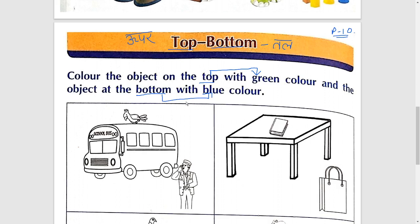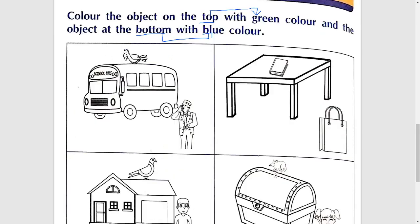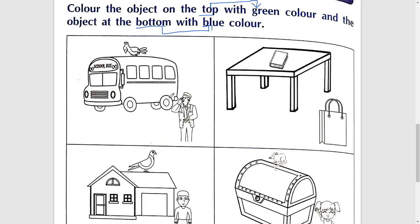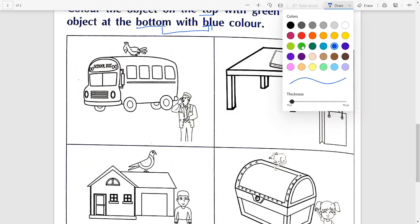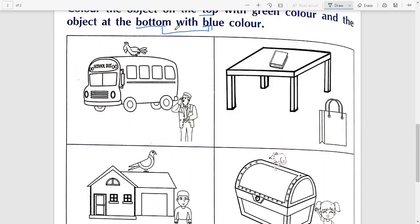अब देखिए यहां पर अलग-अलग boxes दिए गए हैं। हर box में दो objects हैं — top पर क्या है आपका bird, तो इस bird को आप green करेंगे।